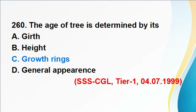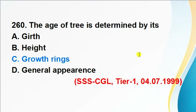Question 260: The age of a tree is determined by growth rings. Answer C is correct. Growth rings represent the age of the tree. In a horizontal cut section of a tree trunk, many rings are visible — these are formed by the vascular cambium and represent the tree's age.